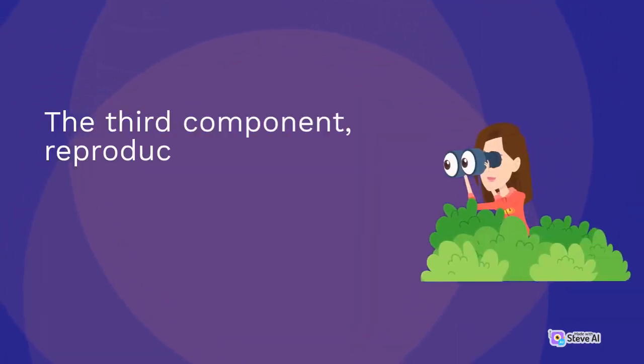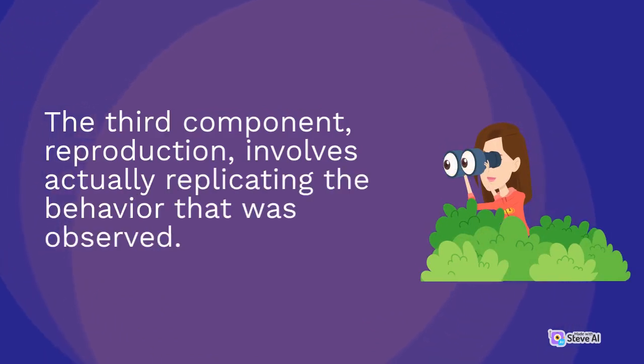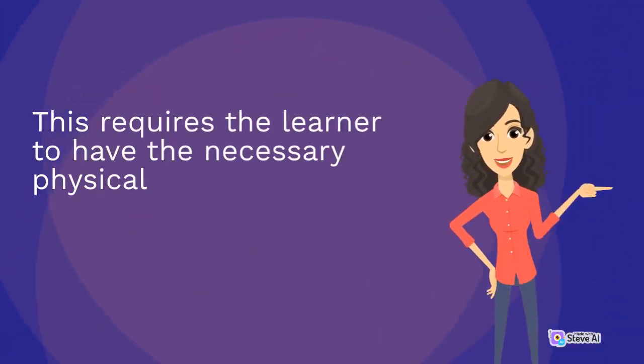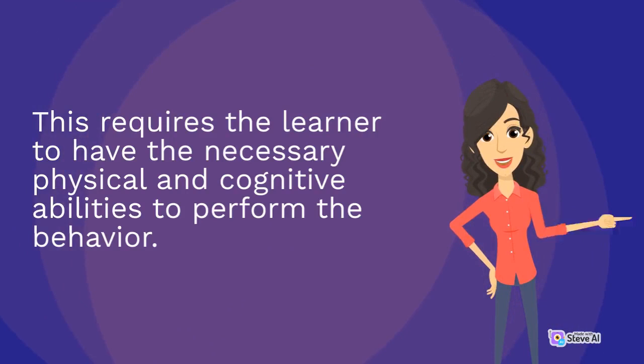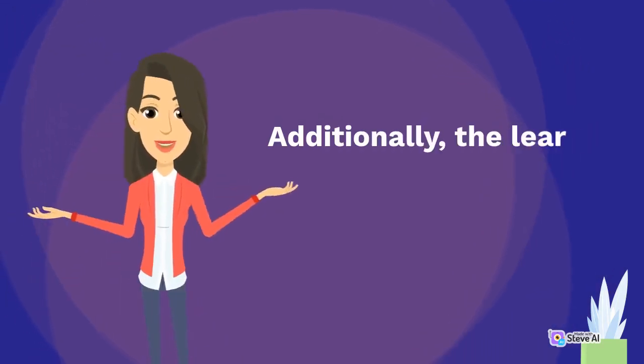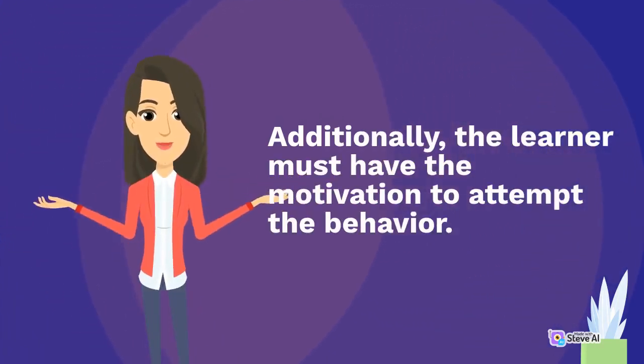The third component, reproduction, involves actually replicating the behavior that was observed. This requires the learner to have the necessary physical and cognitive abilities to perform the behavior. Additionally, the learner must have the motivation to attempt the behavior.